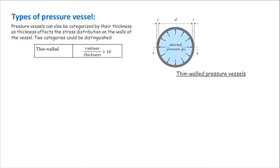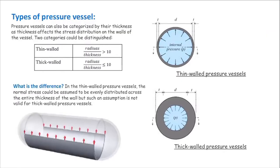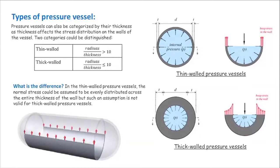Based on wall thickness, pressure vessels fall into two categories. In the thin wall pressure vessel, the ratio of radius to thickness is typically larger than 10 — meaning the thickness is much smaller than the diameter. In thick wall pressure vessels, that ratio is typically smaller than 10. On thin wall vessels, stresses can be assumed uniformly distributed through the wall thickness, but on thick wall vessels, stresses are non-uniformly distributed, making calculations more difficult. In today's lecture, we focus on thin wall pressure vessels.